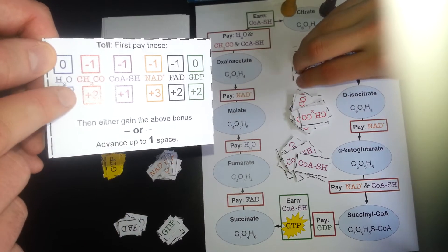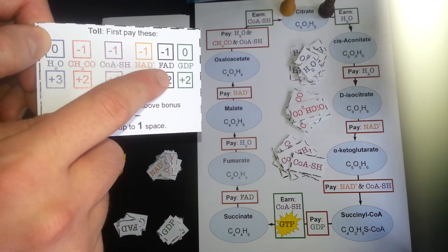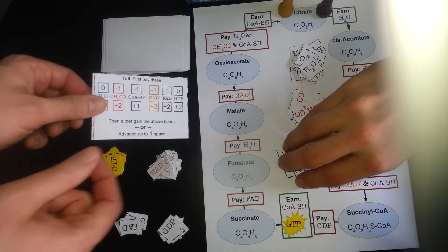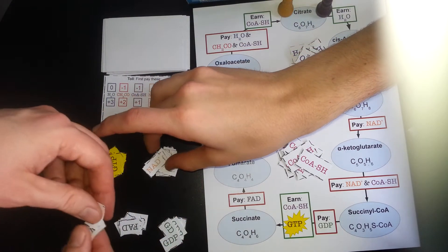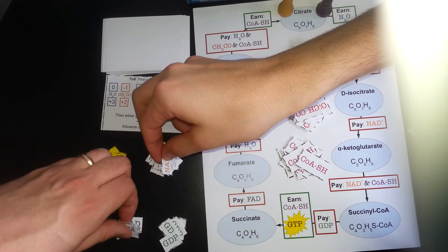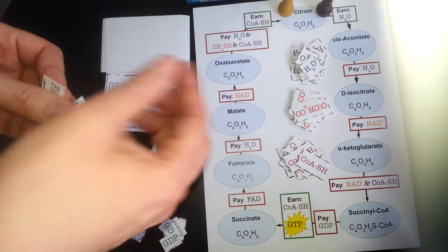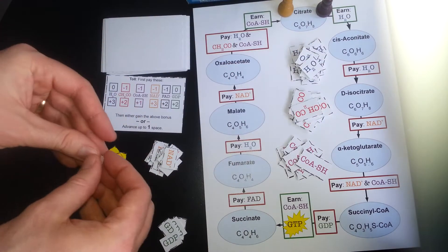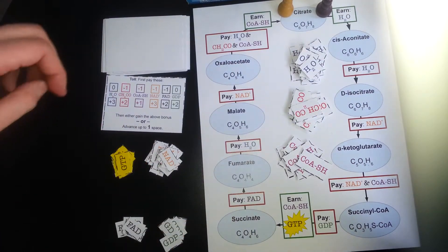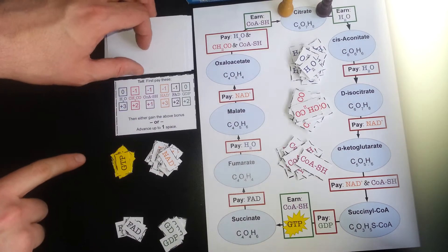So he gets three waters, two CH2COs, one CoASH, three NAD+, two FADs, and two GDPs. So let me help you collect these. Here are the GDPs. Oh, sorry. Yep, here are the FADs. I'll put that back. Okay, and then that's the end of his turn. He only gets to do one or the other of those two things, not both.